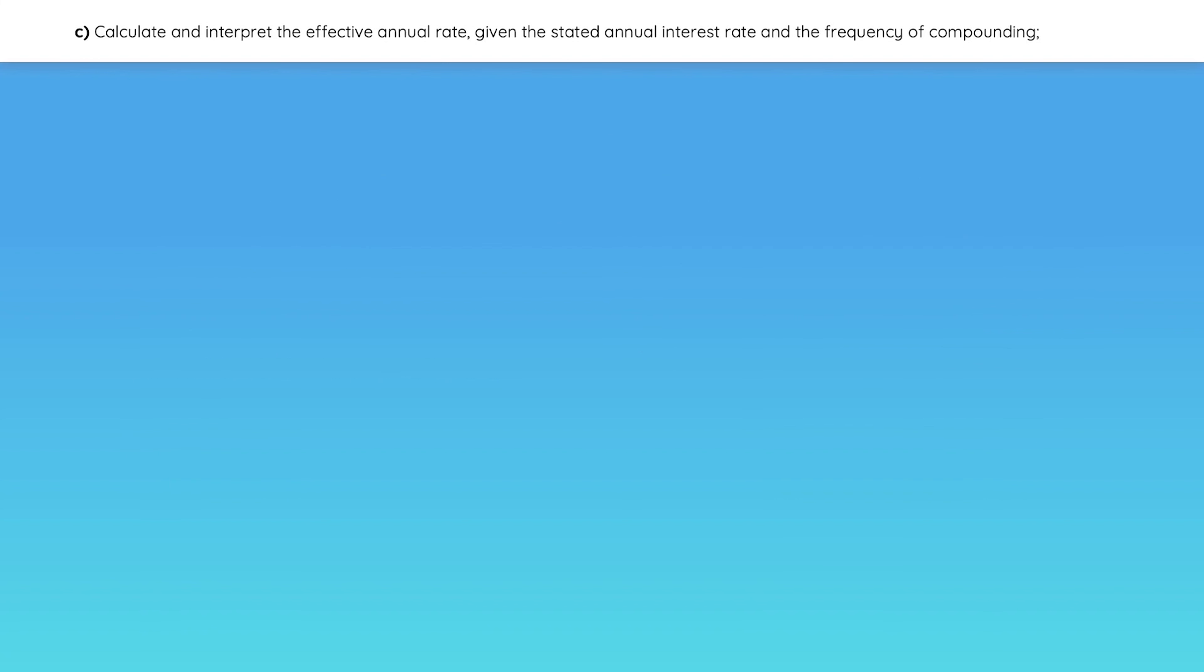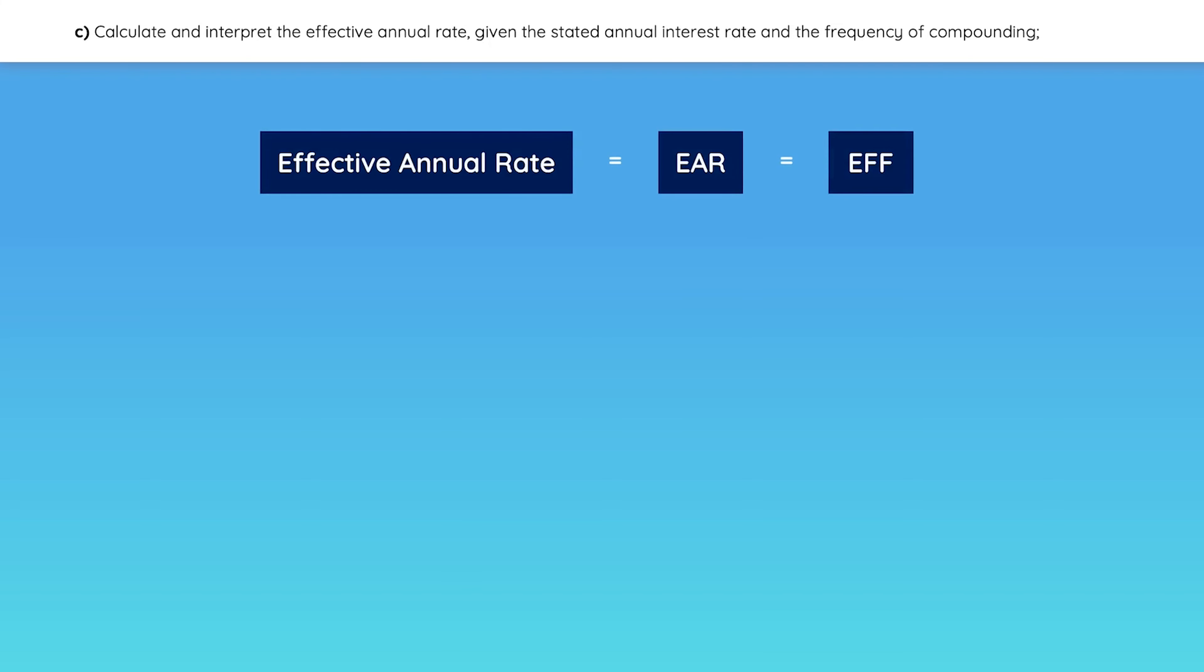Some students tend to get confused with the following terms: Effective annual rates, also known as EAR or EFF; Stated annual rates, which is the same as APR or nominal rate; and periodic rates. So let's clarify what each of these are.